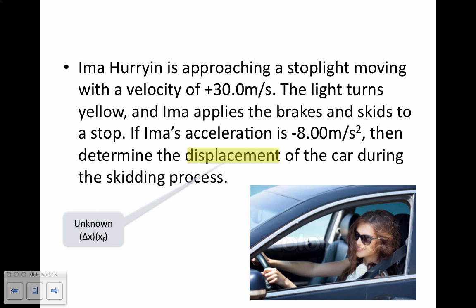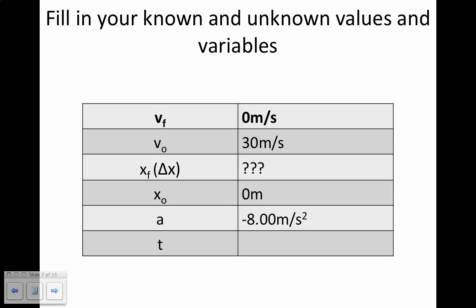In this case, displacement, delta x, will also be final position. If they don't give you an initial position, assume that the initial position is 0. Here we have a table that you should fill in with all of our known and unknown variables. Our final velocity is 0 meters per second because the car came to a stop. Our initial velocity is 30 meters per second. We are looking for final position, also known as displacement. The problem didn't give us an initial position, so we assume that is 0. Also, the problem told us the acceleration is negative 8.00 meters per second squared. Make note: I did not say deceleration — you can only accelerate, not decelerate.